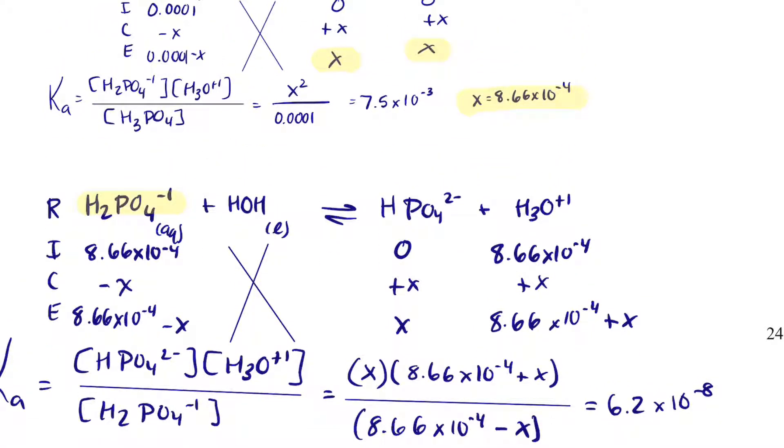And I can use the 5% rule. I can get rid of minus x and plus x so long as there is an x remaining, which there is. So I'm going to do that. And then I can also see that 8.66 times 10 to the minus 4 divided by itself will just be 1, and so that'll cancel out here. So I'm left with just that x. This math was not so bad. x is just equal to 6.2 times 10 to the minus 8. So right now I could go one more step and do the third dissociation.